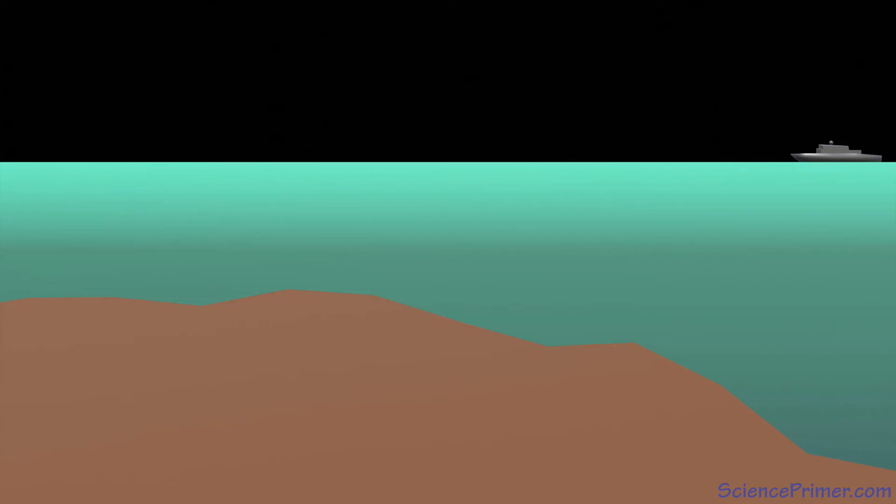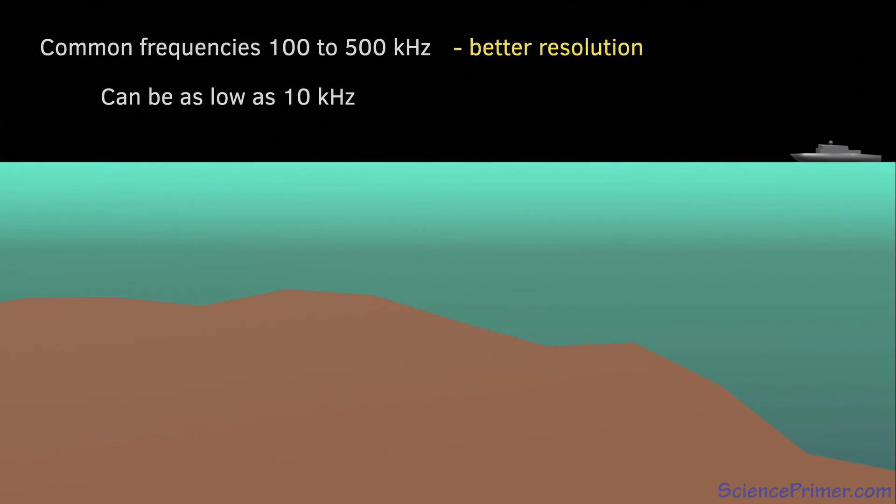With good data about the speed sound travels in water under various conditions, this method can provide detailed information about seafloor's depth, structure, and composition. The range of frequencies for this type of mapping is generally between 100 and 500 kHz, but can be as low as 10 kHz. There is a trade-off between range and resolution, with higher frequencies providing higher resolution, but covering a lower range. Since higher frequencies don't travel as far, deep-sea mapping requires the use of frequencies at the lower end of this range.